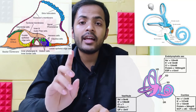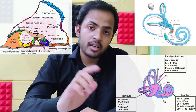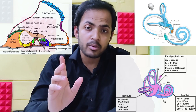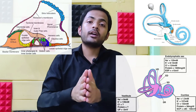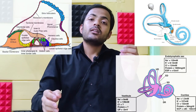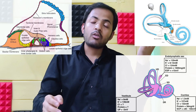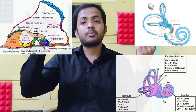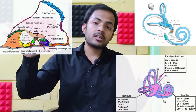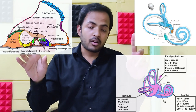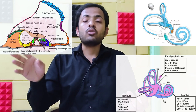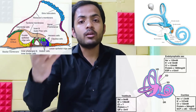Endolymph is a special kind of fluid present in the inner ear, mainly inside the membranous labyrinth — not inside the bony labyrinth. As I told you in my earlier video, the membranous labyrinth is present inside the bony labyrinth. The three semicircular canals consist of three semicircular ducts, which are part of the membranous labyrinth. The vestibule consists of the utricle and saccule, and the cochlea consists of the cochlear duct — all parts of the membranous labyrinth.